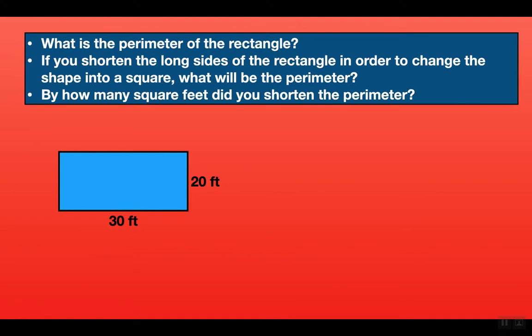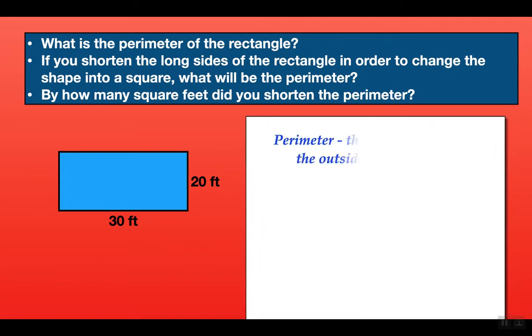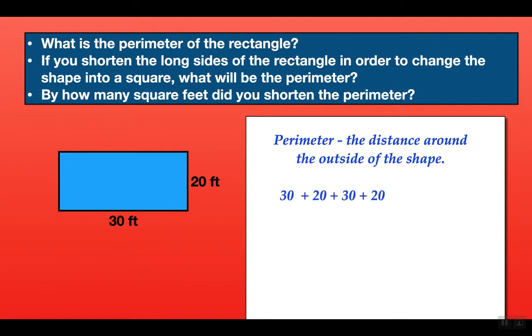In this video we're going to be reviewing area and perimeter. Our first question consists of three questions. The first question is: what is the perimeter of the rectangle? The perimeter is the distance around the outside of the shape, so to find the perimeter you have to add up all the sides. In this rectangle we're going to add 30 plus 20 plus 30 plus 20, and that gives us the perimeter which is 100 feet.